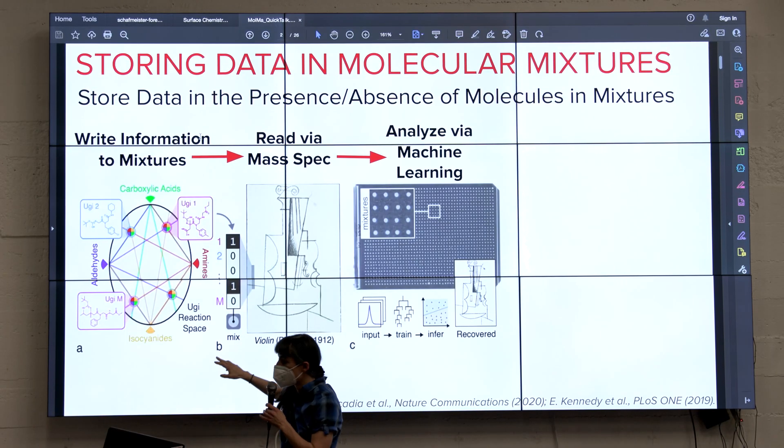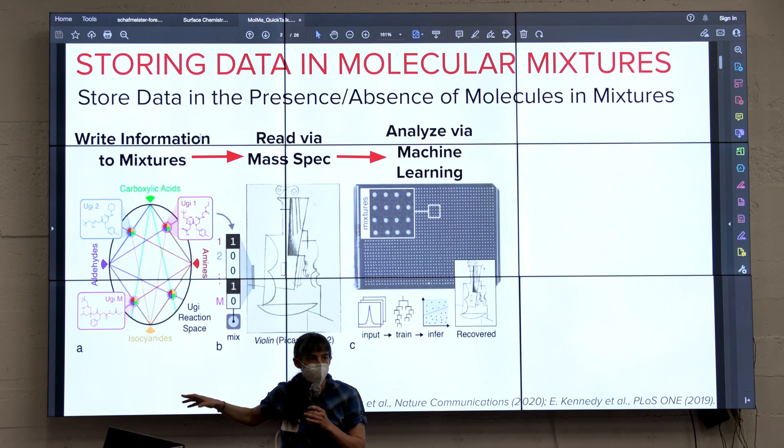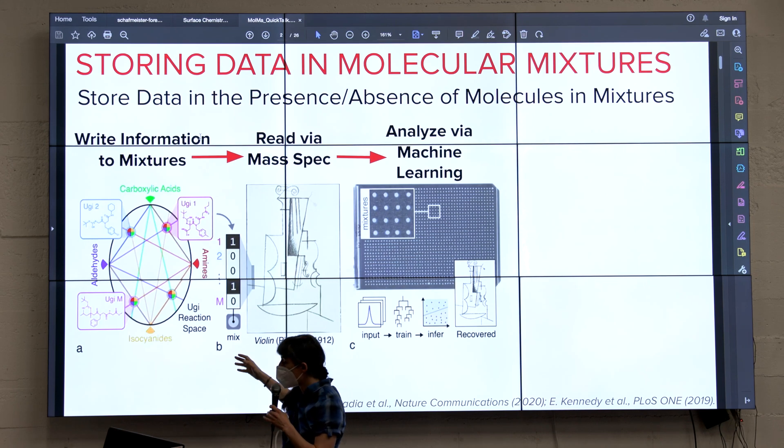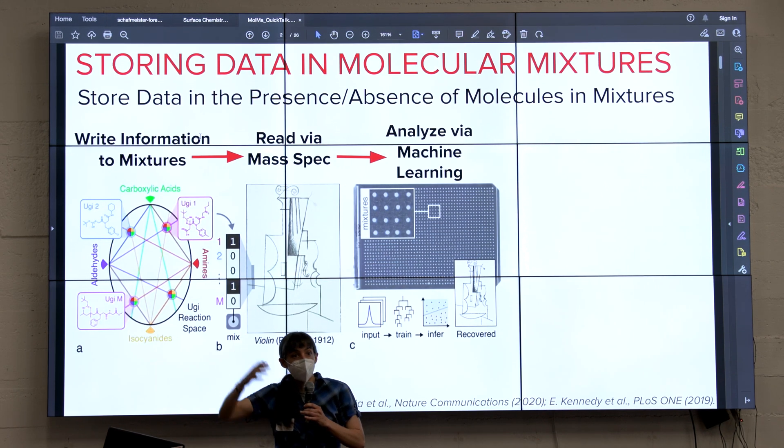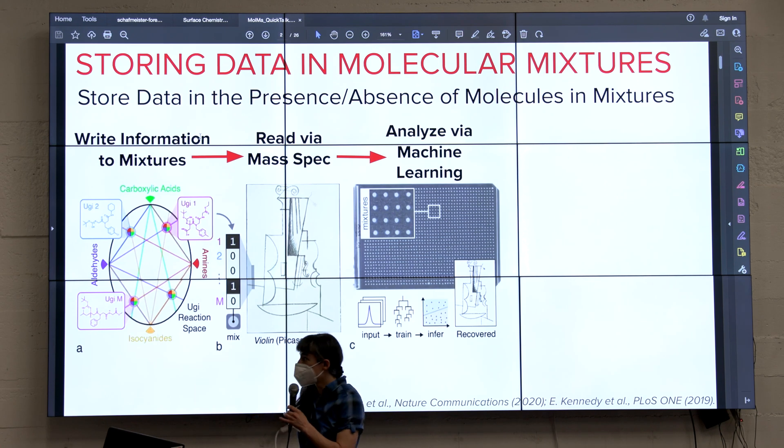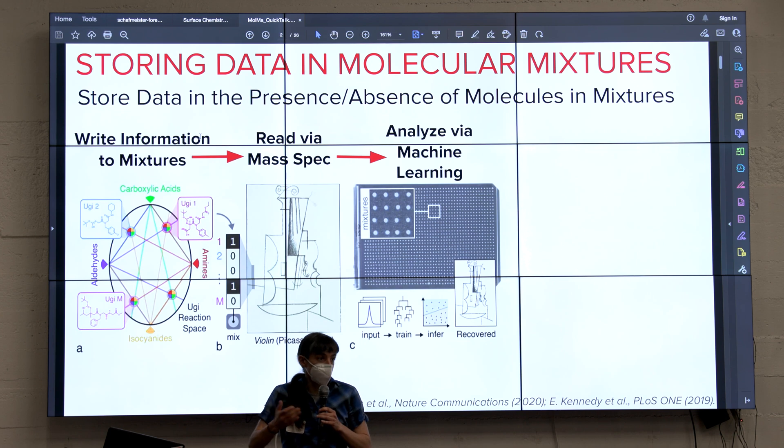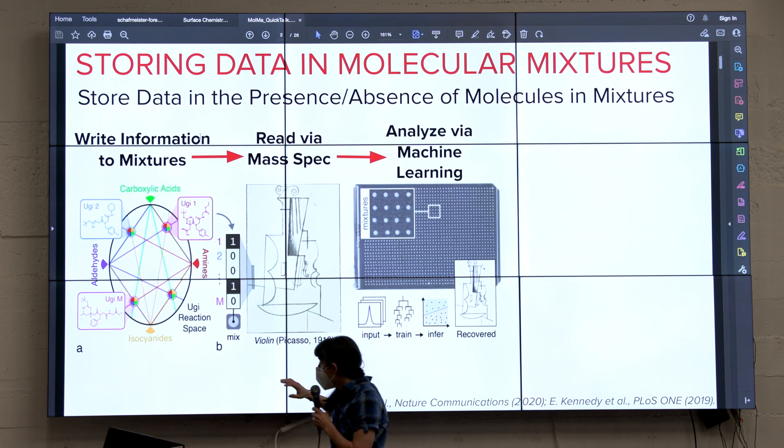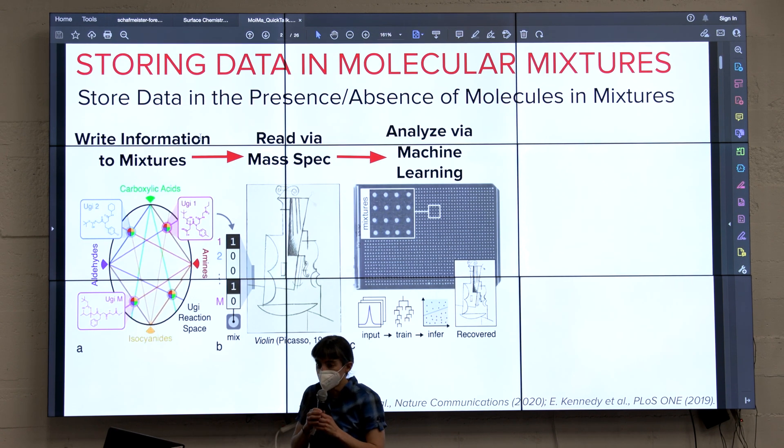Here I'm showing an example set of molecules. When we first did this, we thought about using multi-component molecules because you can combine a large number of components to make even more different small molecules. But we realized this concept applies to all molecules. By forming your mixtures, you can encode large amounts of information. This is Picasso's violin, for example.